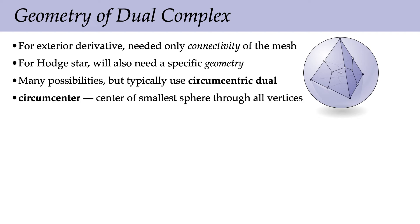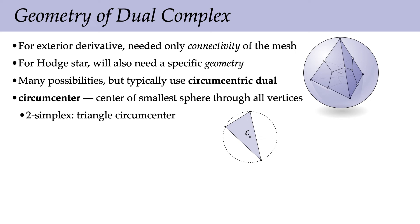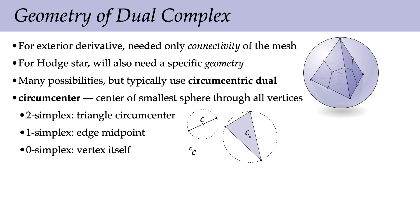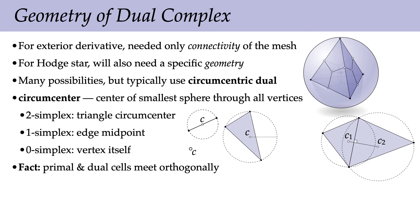The circumcenter of a triangle is the center of the unique circle through all three vertices; for an edge it's the midpoint; for a vertex it's the vertex itself. In the circumcentric dual, we connect circumcenters: two triangles sharing an edge give a dual edge connecting their circumcenters. An important fact is that primal and dual cells meet orthogonally — in particular, a primal edge and dual edge meet at a right angle.